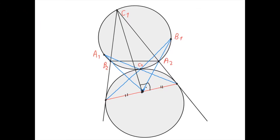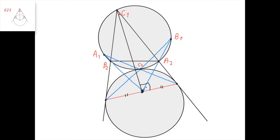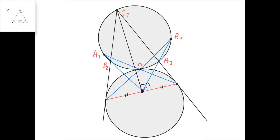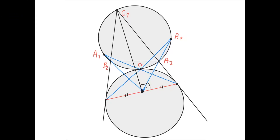Now that we've proven that the excenter lies on this segment, we can also prove that it is the midpoint of this segment. Since this and this are tangent lines to this circle from this point, this length equals this length, and so this triangle is isosceles. We know that this is the angle bisector of this angle, and therefore it is not only the angle bisector but also the median and the altitude in this triangle.